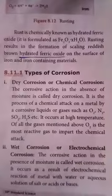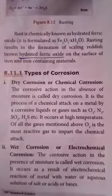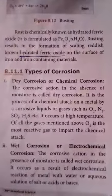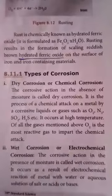We have two types of corrosion: dry corrosion, also called chemical corrosion, and wet corrosion, also called electrochemical corrosion.